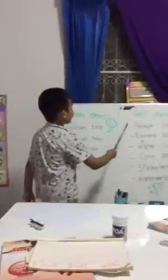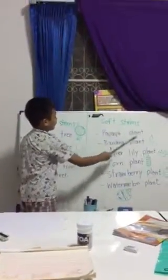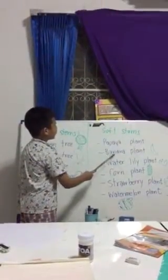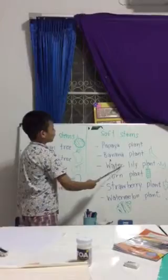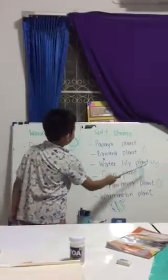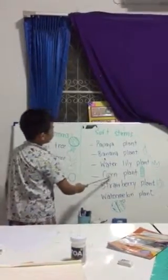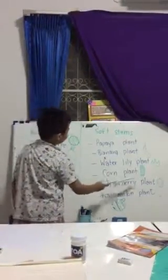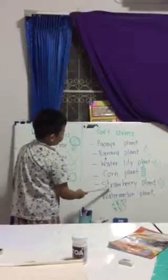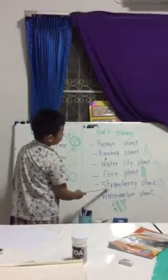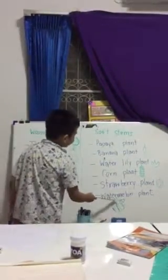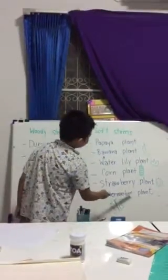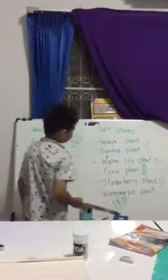For soft stem plants, there are papaya plant, banana plant, water lily plant, corn plant, strawberry plant, and watermelon plant.